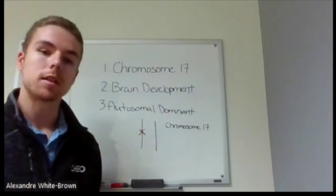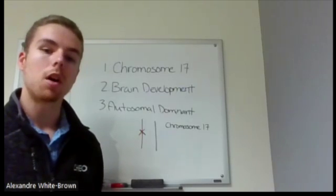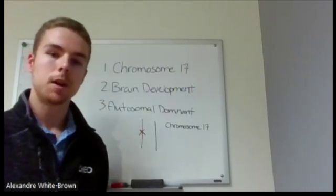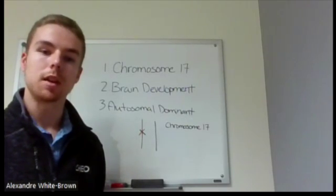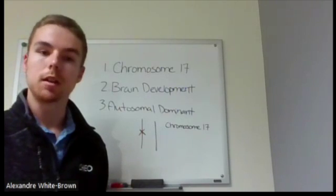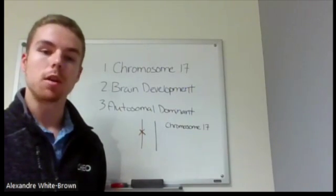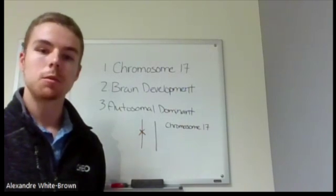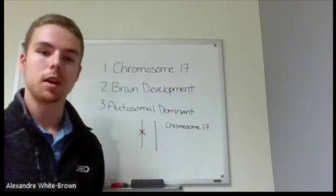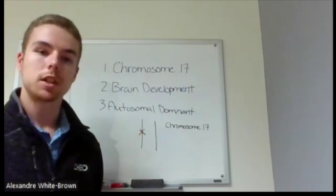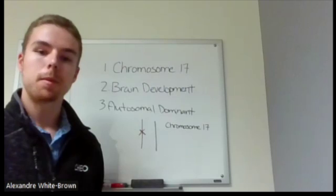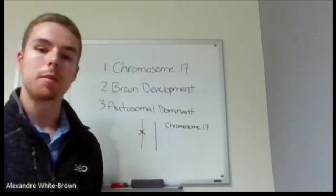DLG4 is associated with what we call an autosomal dominant disorder. Some of you may have heard various names for the condition associated with DLG4 — whether it be DLG4-related disorder, DLG4 synaptopathy, or the newly denoted Schein syndrome, which stands for sleep disturbances, hypotonia, intellectual disabilities, neurological symptoms, and epilepsy. This condition, now known as Schein syndrome, is inherited in an autosomal dominant fashion.